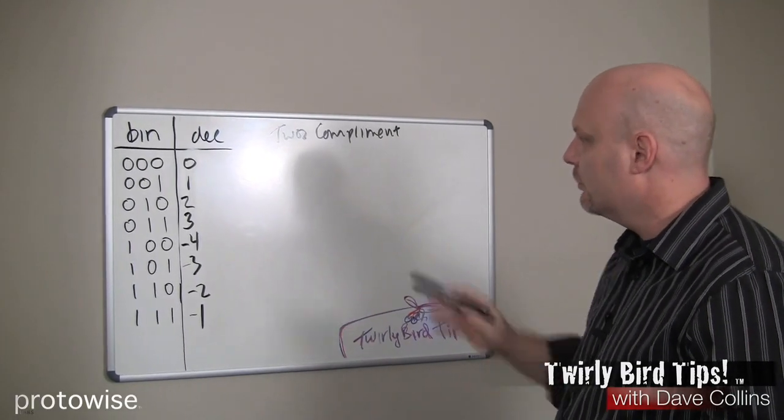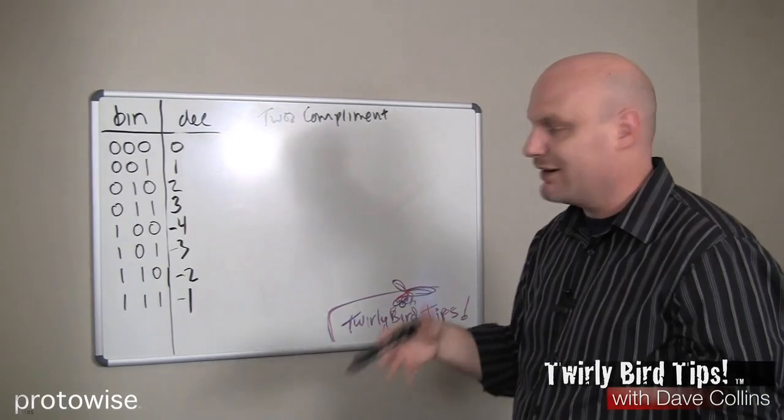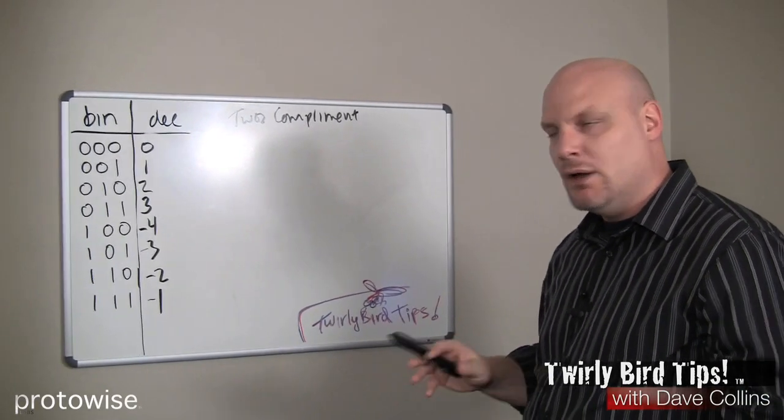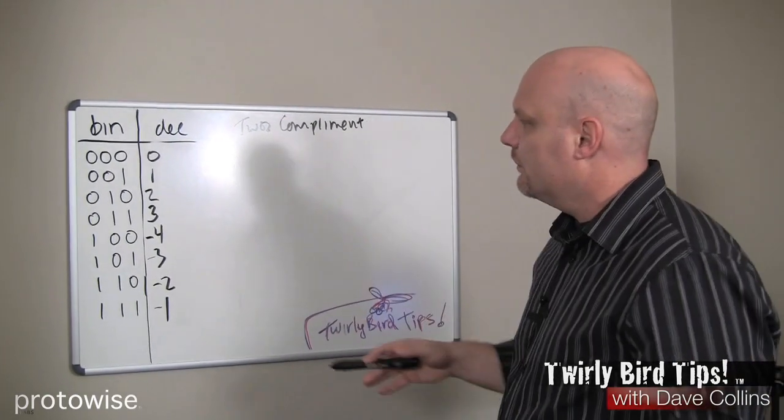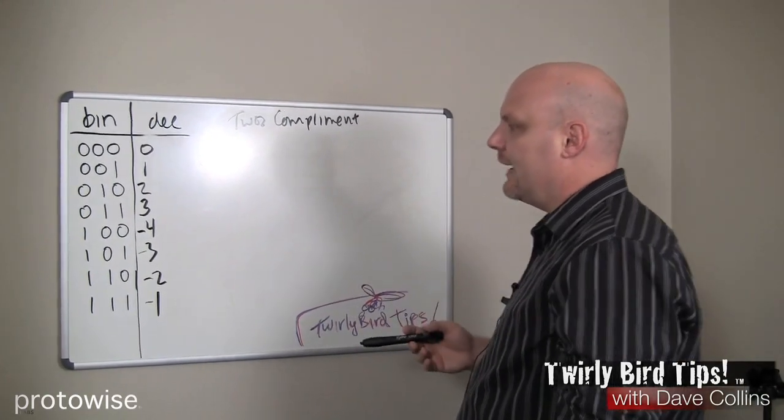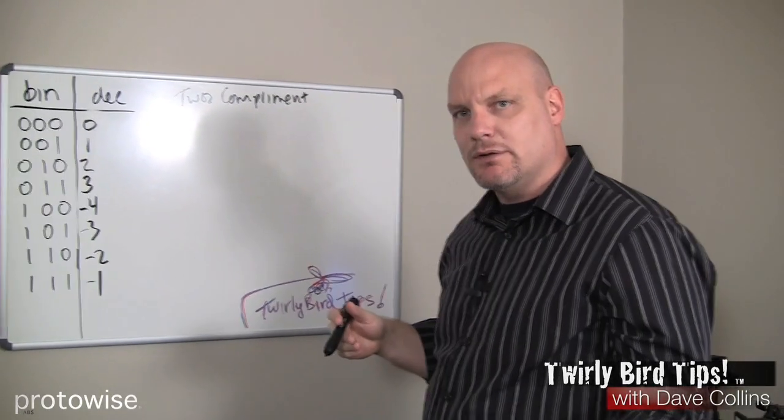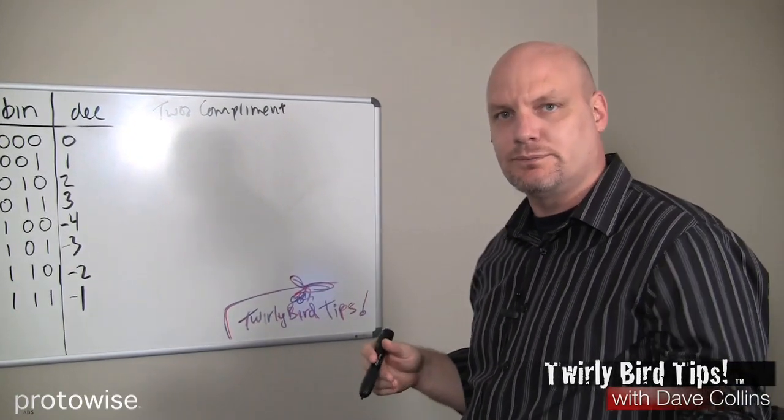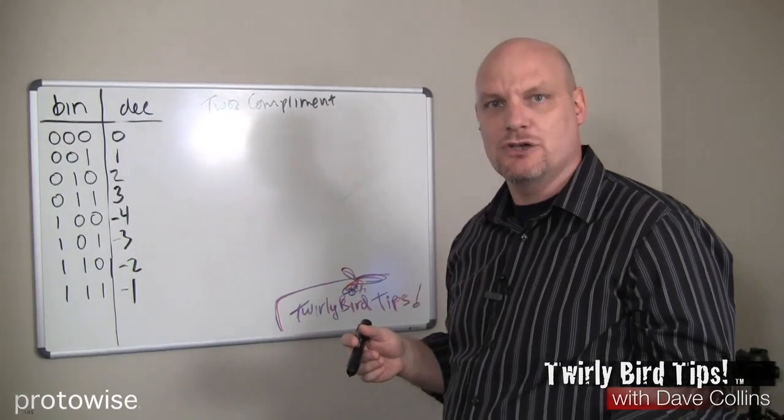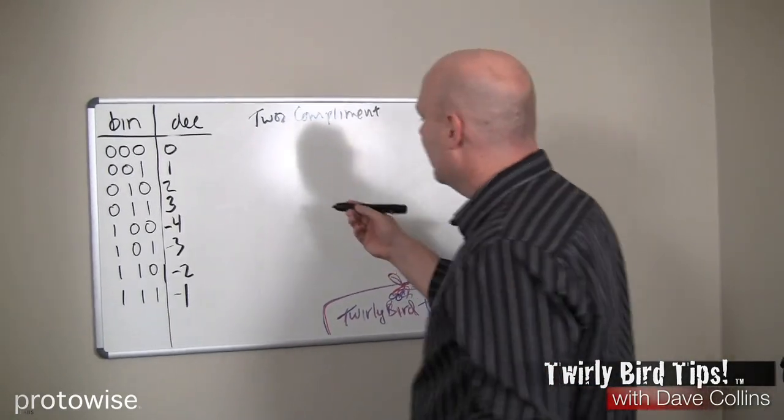So some interesting things to note about the two's complement representation and how you can interpret these things at a glance, at least for some of the extreme values. Now with that said, let's do a couple of problems and see if this thing actually works. One of the other benefits about a two's complement system is that we can implement our subtraction and turn our addition as simple addition. This is a major hardware advantage because we can simply do everything with an adder.